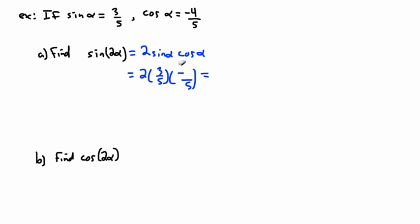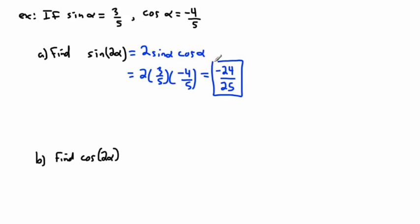Working that out: three times negative four is negative twelve, times two gives negative twenty-four. The denominator is five times five, which is twenty-five. So sine of two alpha equals negative twenty-four over twenty-five. We can't simplify further, so that's the answer.